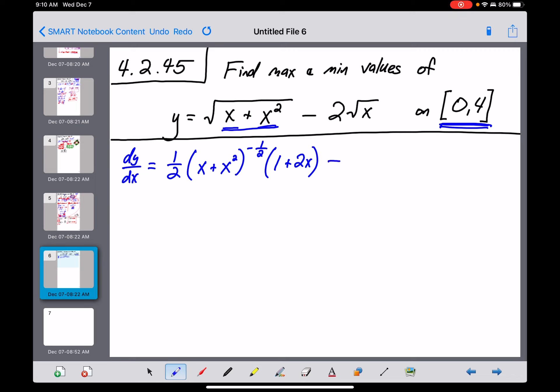And then minus. Now this would be a two times the derivative of the square root of x. I'm hoping by now you guys know that the derivative of square root of x is one over two root x. But that two there is going to cancel out the two on the bottom. So it's just going to be one over the square root of x.